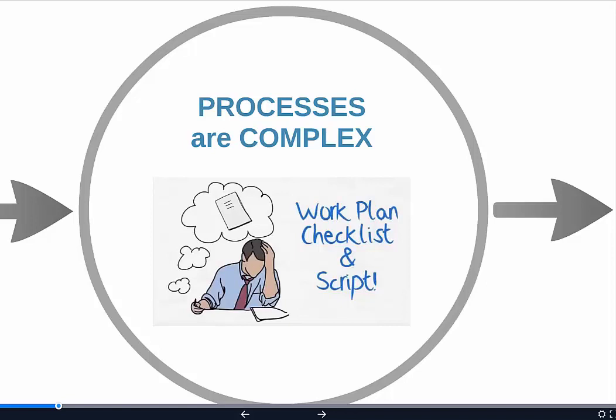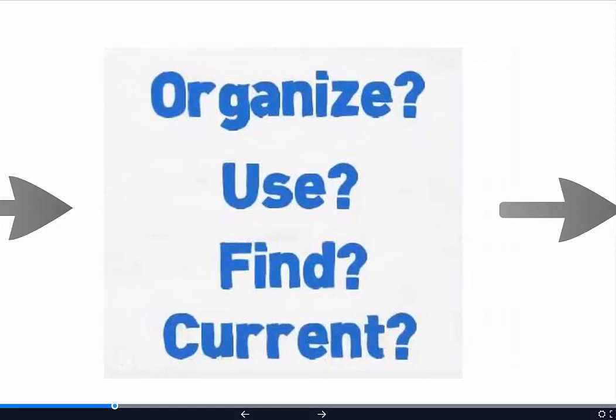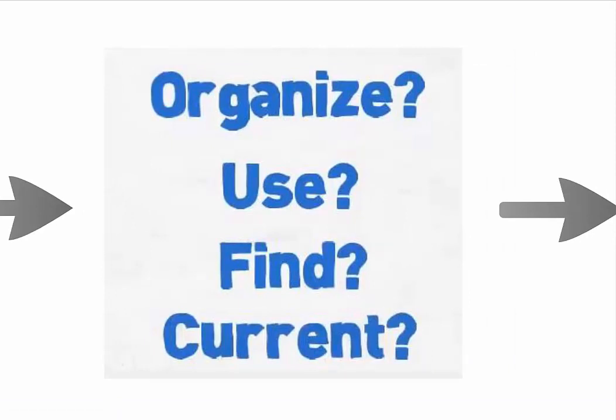Now you have a document which is the work plan, and another document which is a script. Then you realize it might be helpful to have a checklist that people complete so you can see where you are in the process. Or maybe it's a Word document, some forms that get filled in, a video for training, or an audio for training. All of a sudden we've got five, six, or seven different parts that are all part of one process, and it gets very difficult to organize all of these parts. You have to have them organized to be able to use them, find them when they're needed, and keep them current.